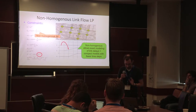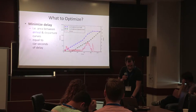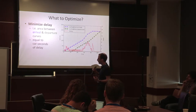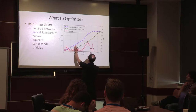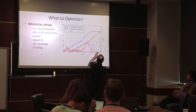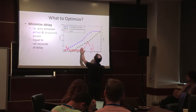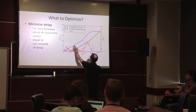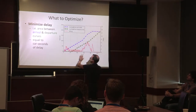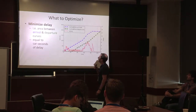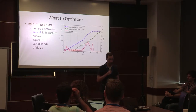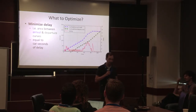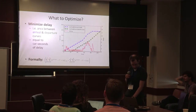What do you optimize in traffic control? You look at a network, count all cars entering over time, then count cars leaving and when they leave. The area between the entry and departure curves — with x-axis in seconds and y-axis in cars — gives you car-seconds, which is total delay. Minimizing that area minimizes total waiting time. That's a natural objective. In practice, good fixed-time control does pretty well, especially in rush hour — you might get around 10-15% improvement over baseline, which the QTM approach achieves.